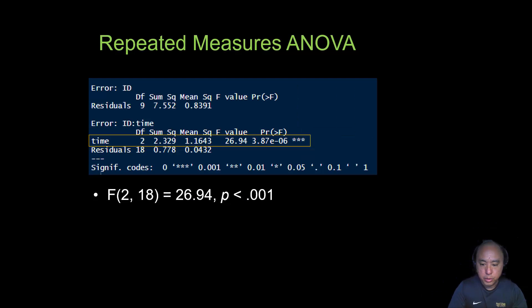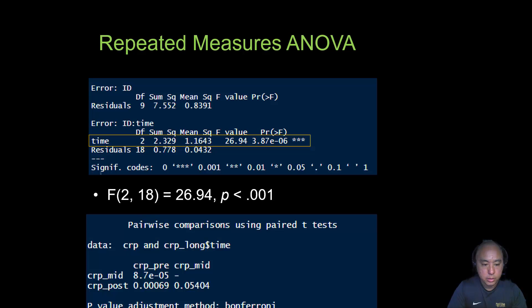The output looks something like this, where the p-value between the mean difference in CRP between the pre and midpoint is less than 0.001, same with the pre versus post, but not between the mid and post. So basically what it means is there is a significant decrease in CRP between the pre and midpoint, as well as between the pre and post point.